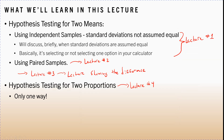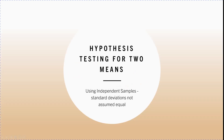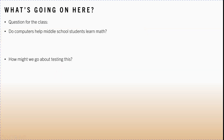Let's begin to set the stage of what I mean by hypothesis testing for two means. We'll develop an example here. This lecture is going to be about hypothesis testing for two means using independent samples, and we're going to assume the standard deviations are not equal. To set this up, let me ask a question: do computers help middle school students learn math?